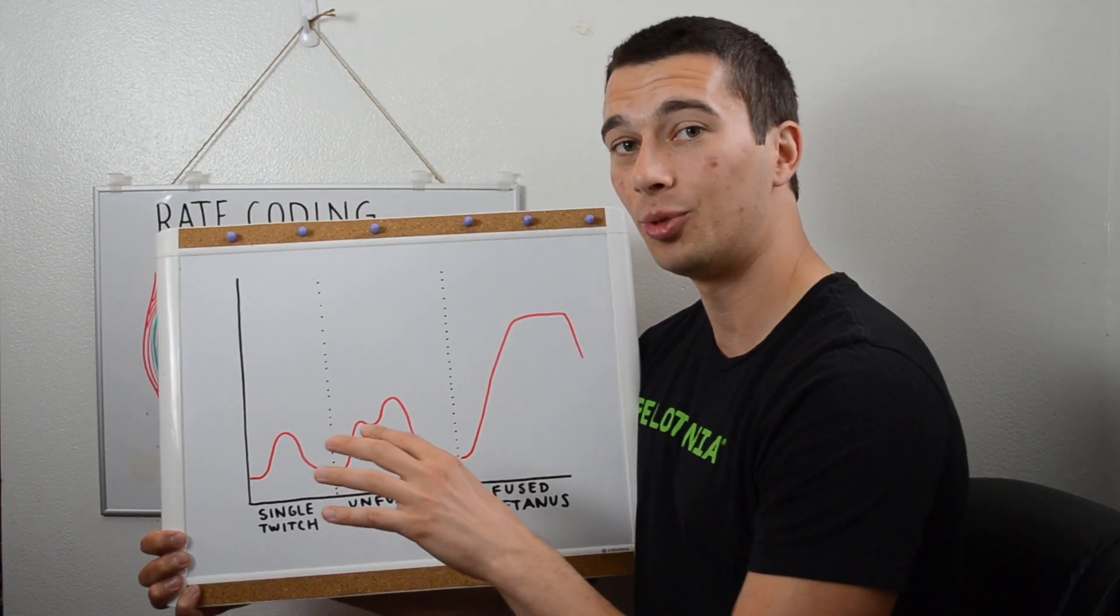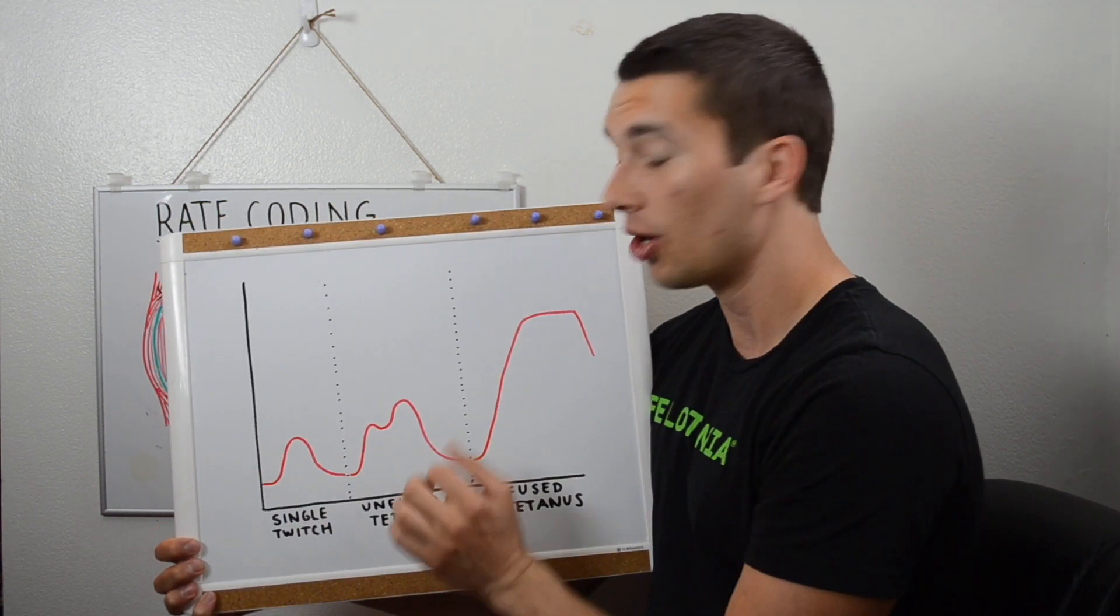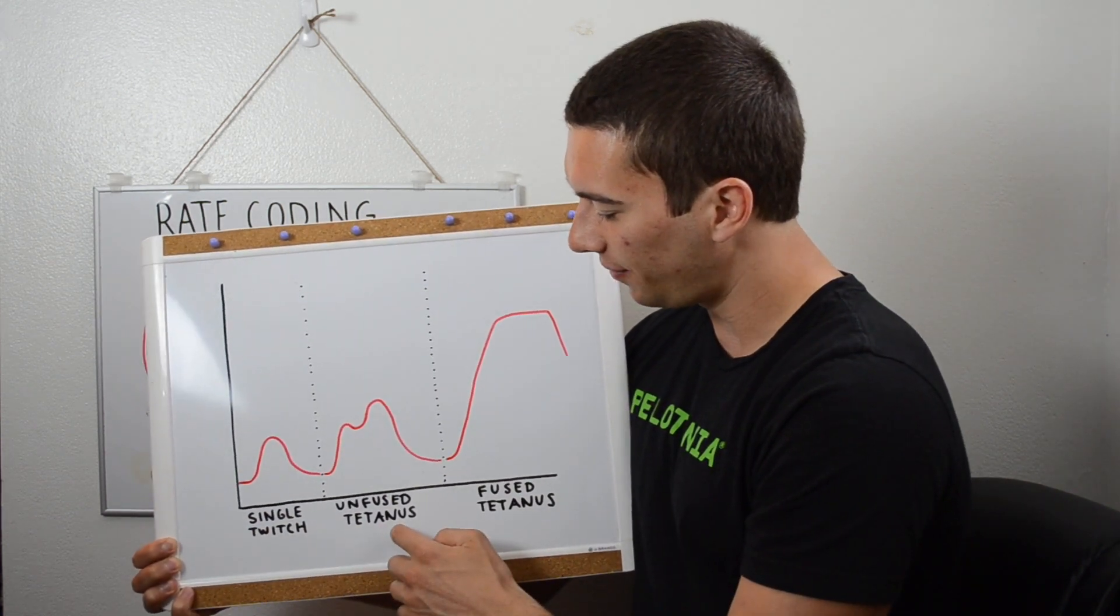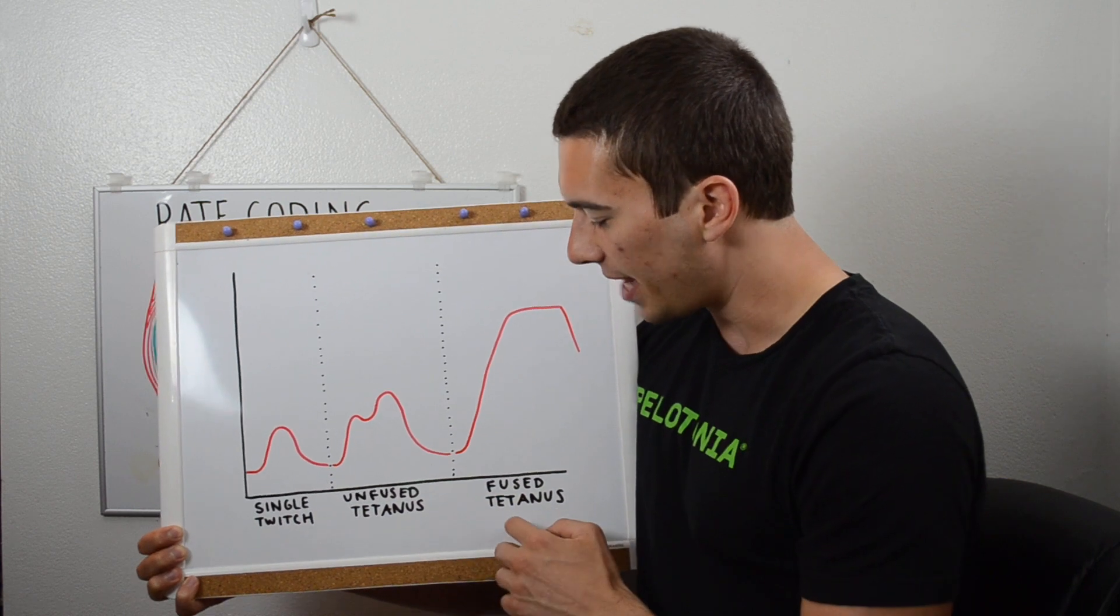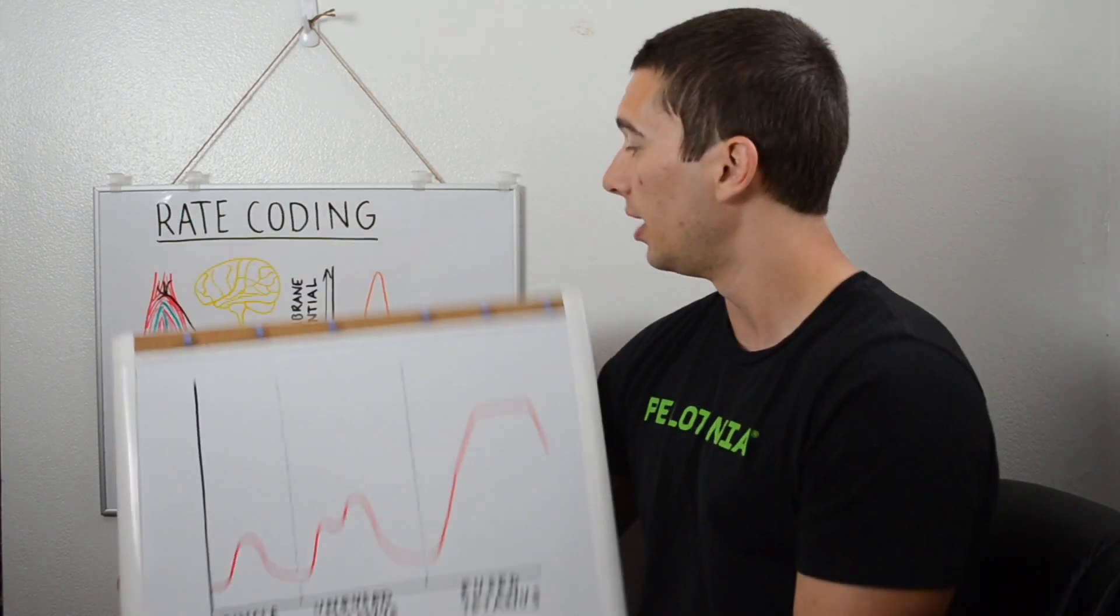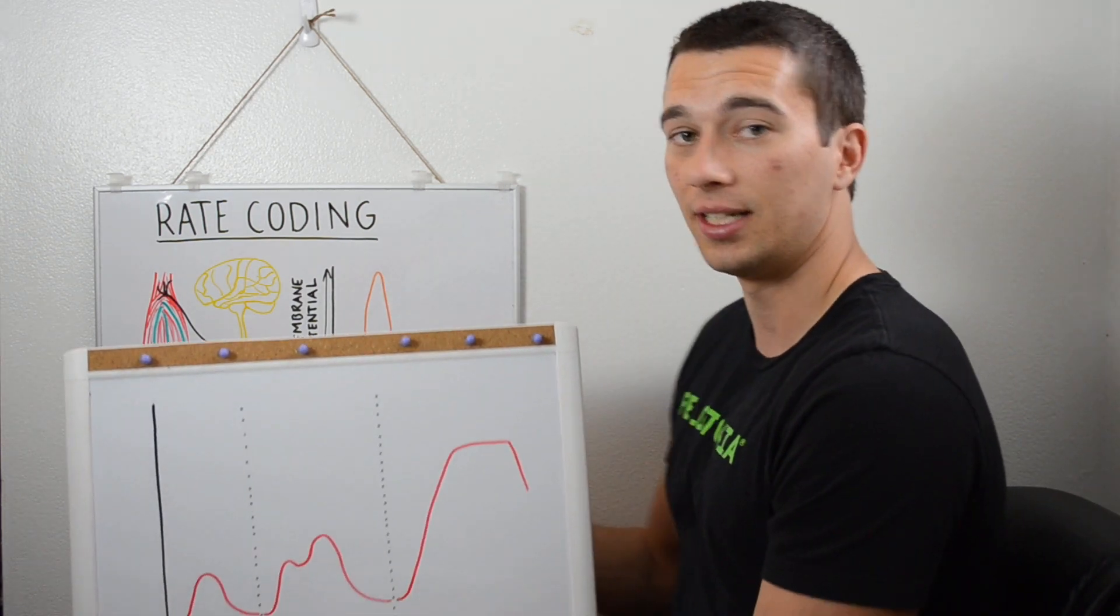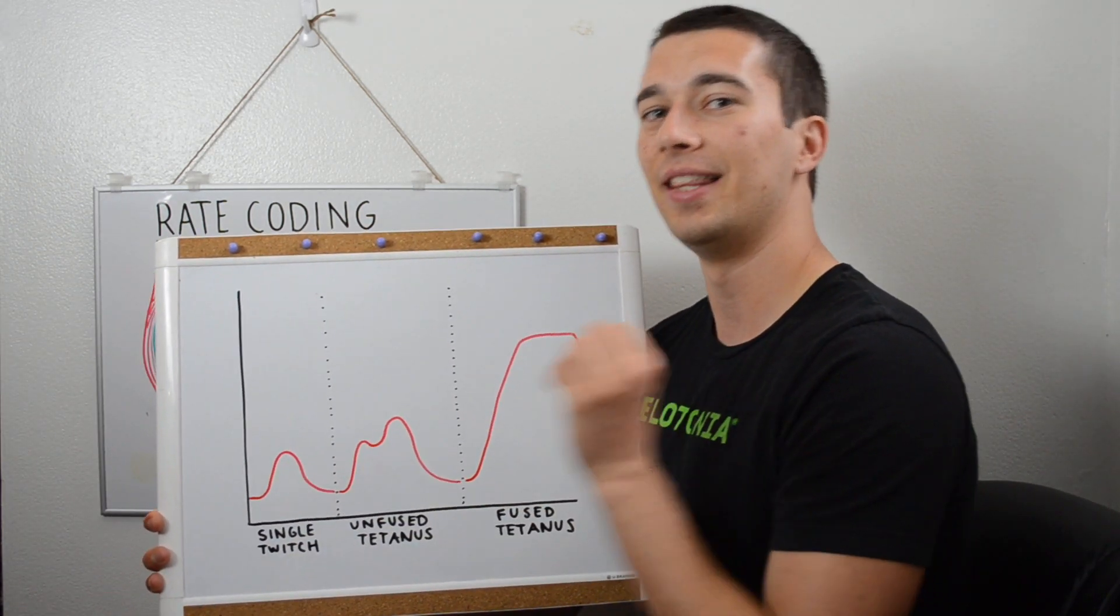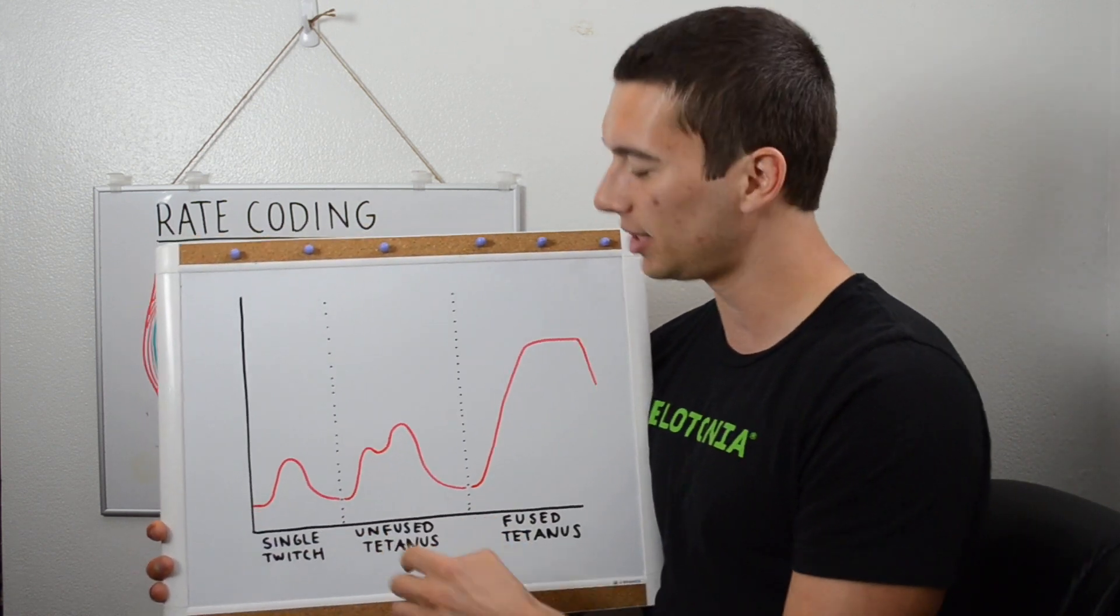So as we send a single signal, an unfused tetanus would be the next step. And then if we keep sending signals quickly and we don't allow the neuron to depolarize and repolarize fully, it just goes through that depolarization and then another depolarization, another depolarization, and that fuses up to a higher recruitment, a higher muscle recruitment.